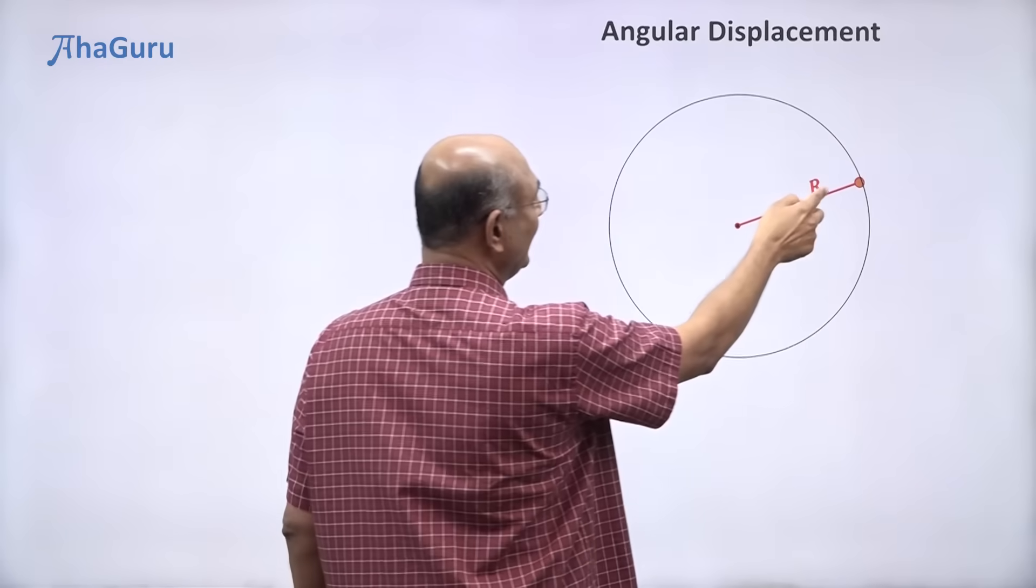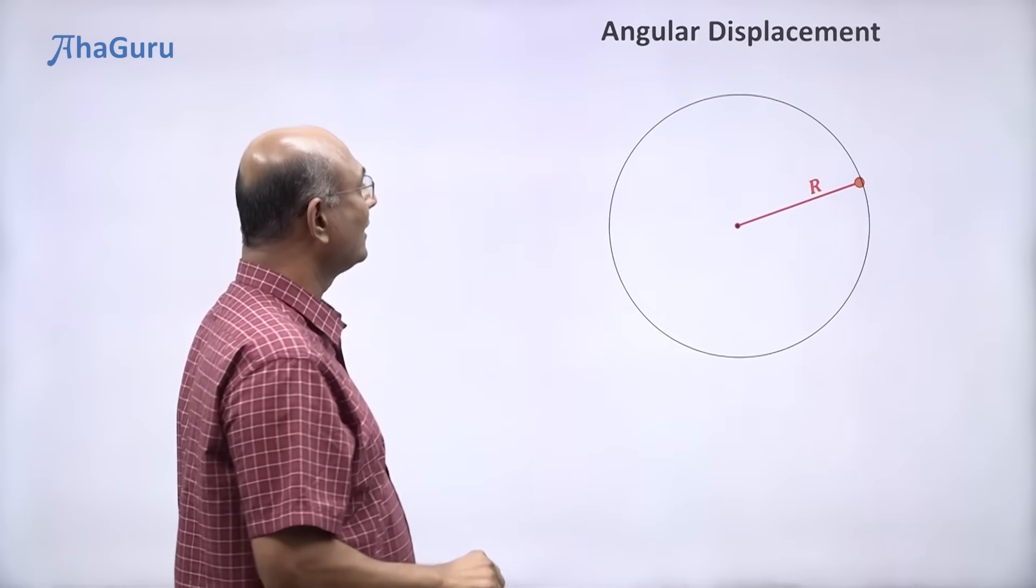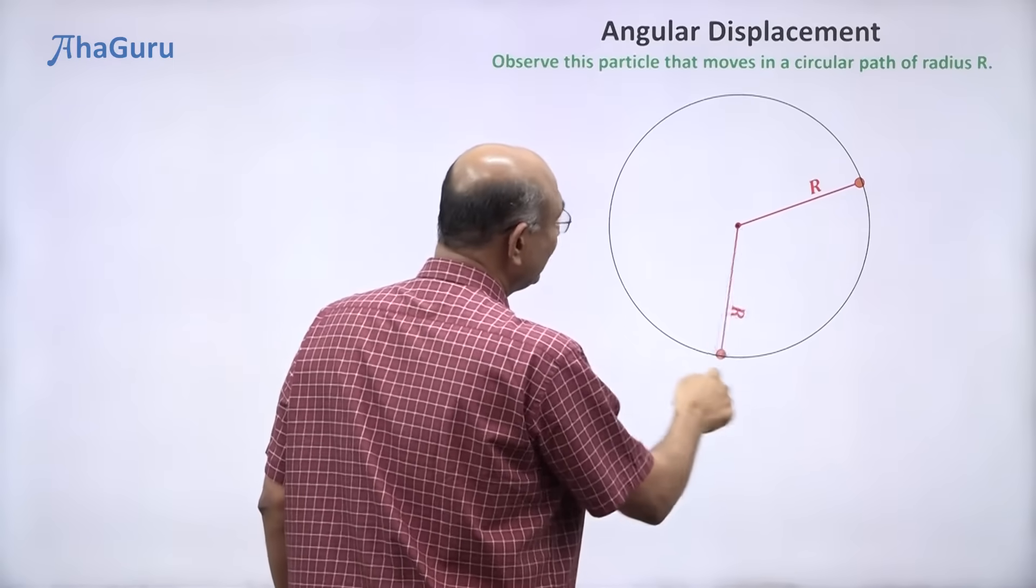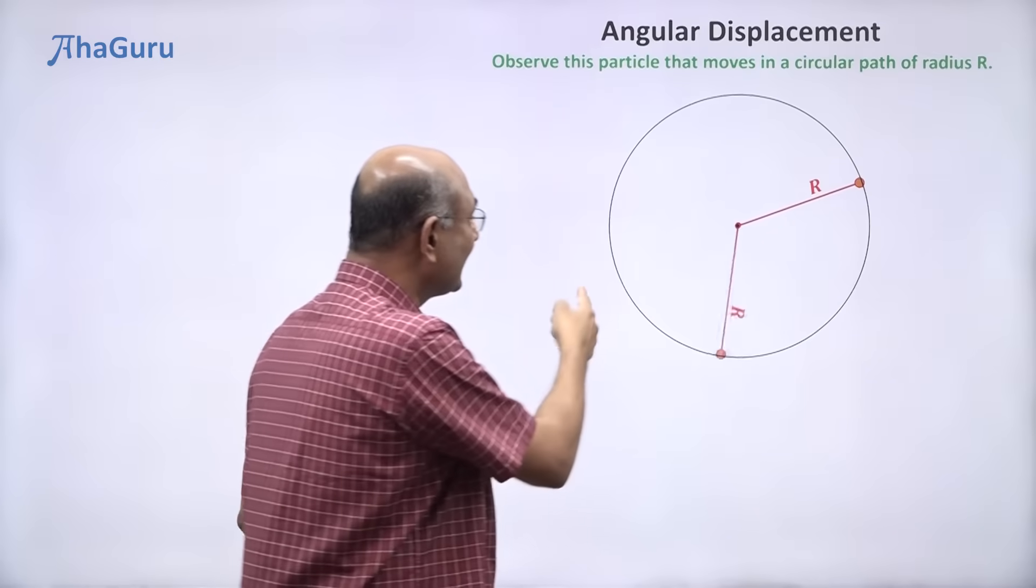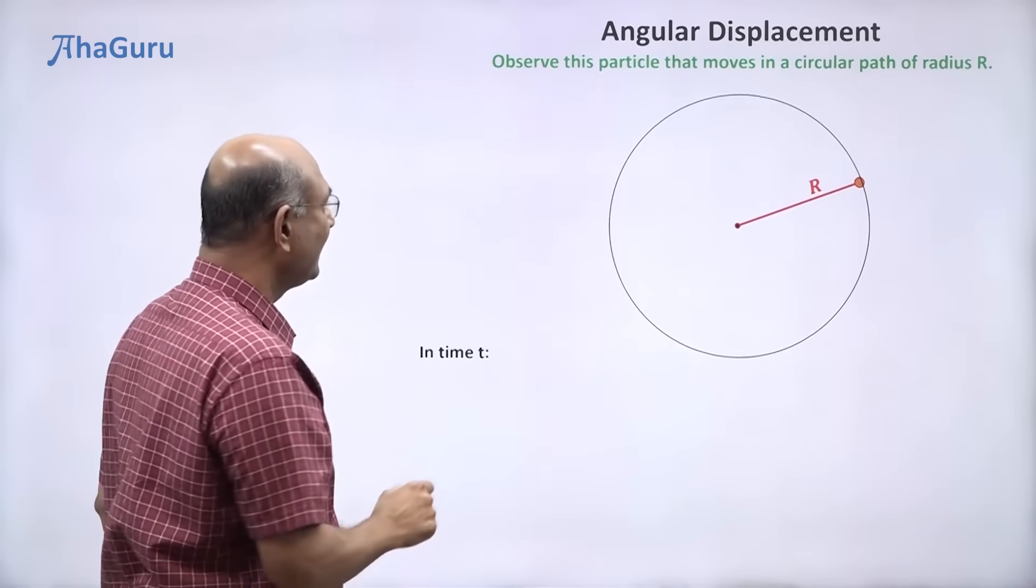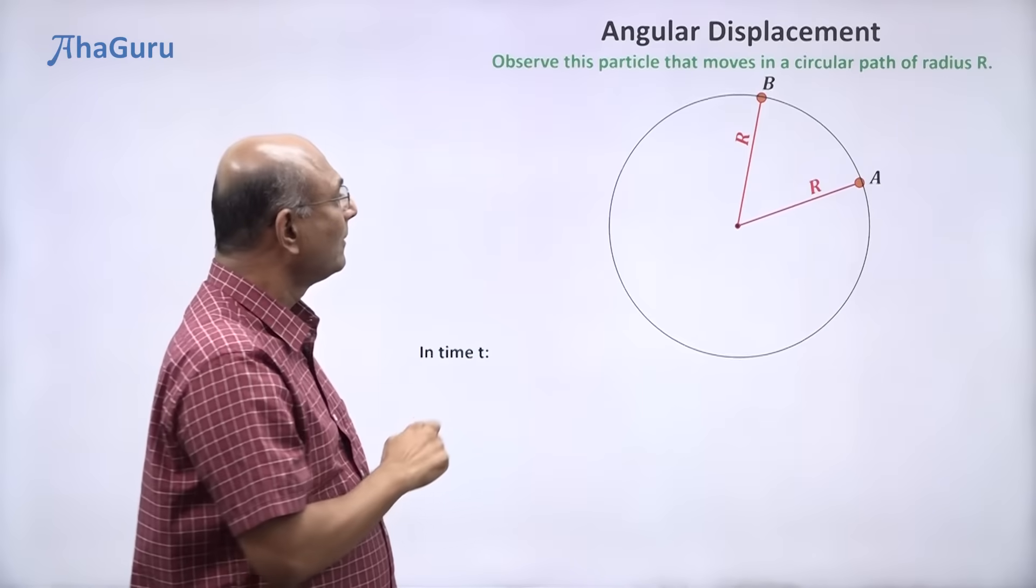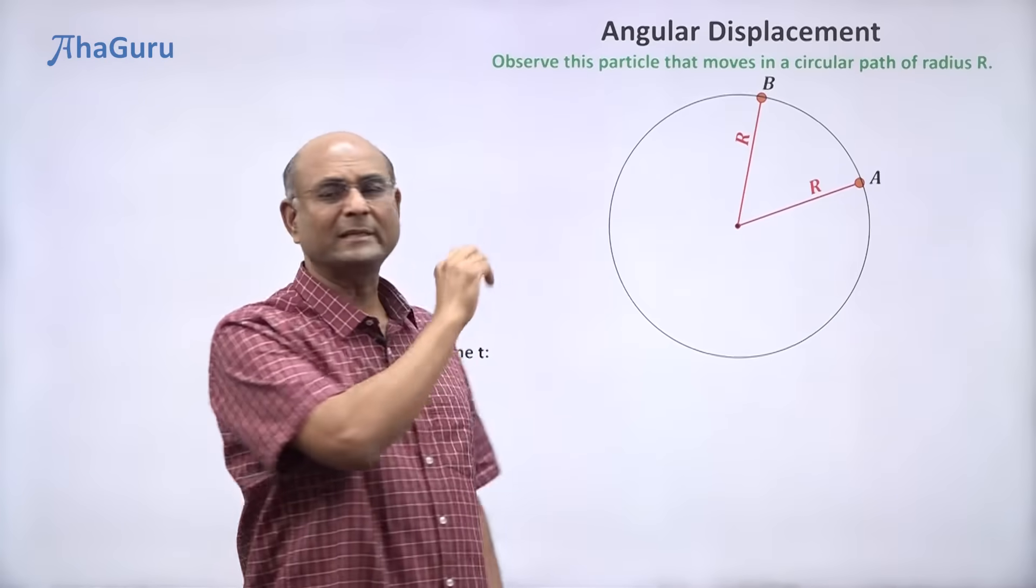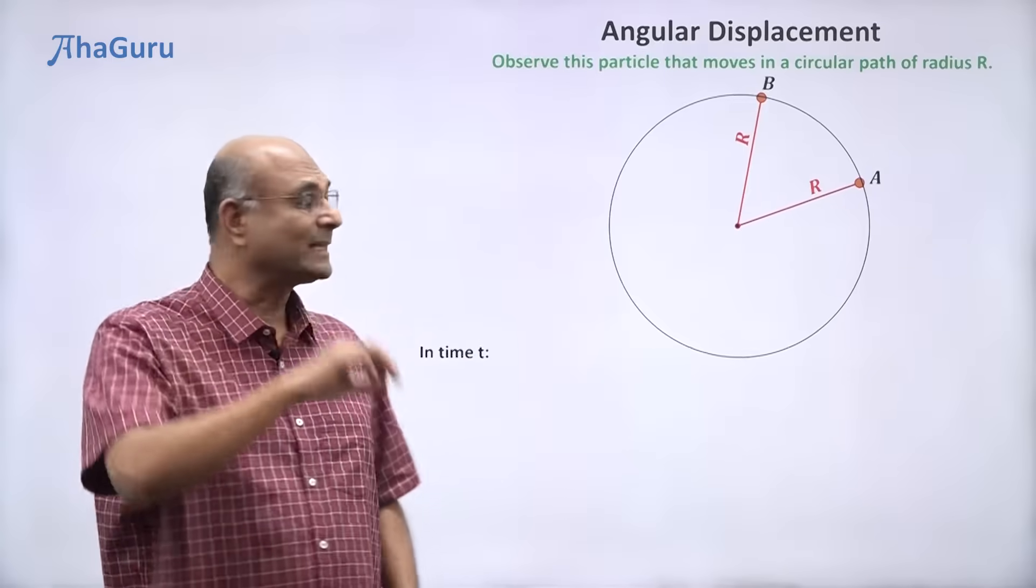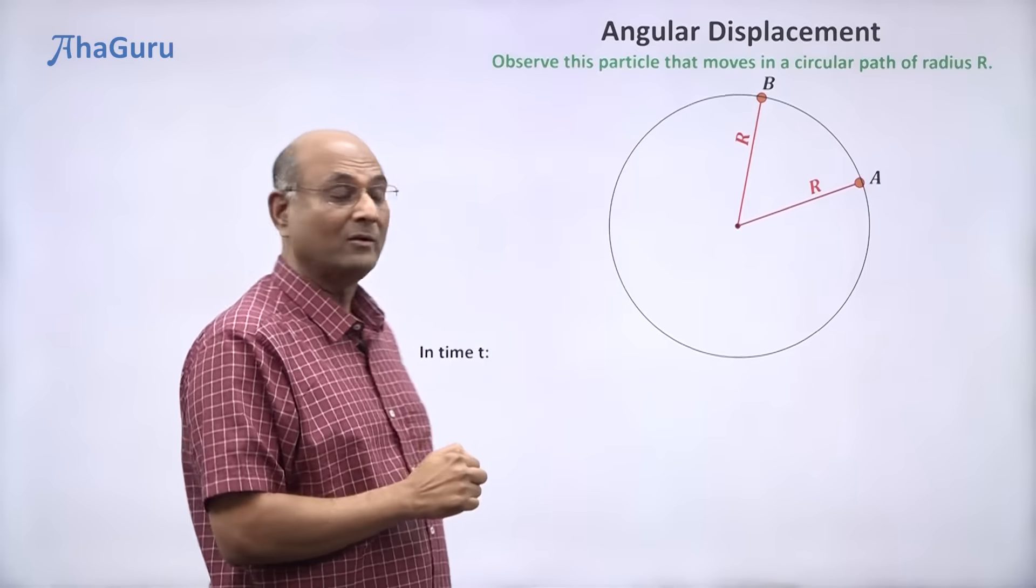Here I have a particle that is moving in a circle of radius r. You can see that when the particle is going around, it is traveling on the circumference. In time t, from a, it travels to b. So suppose I want to ask, how has it moved? How much distance has it moved? Can I say a, b? No.